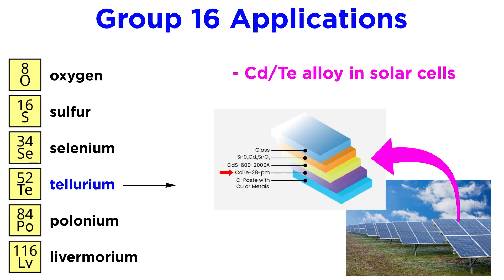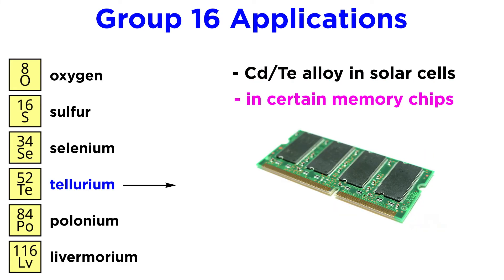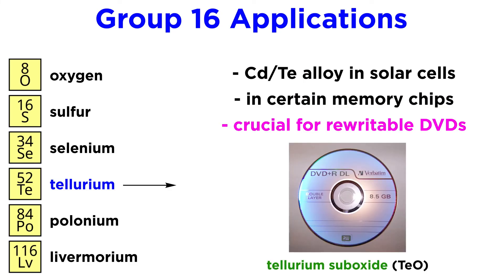Tellurium is found in some types of solar cells in the form of a cadmium tellurium alloy. It is also present in certain memory chips, and was a crucial component in rewritable DVD and Blu-ray discs, where tellurium suboxide reflectivity changes upon heating from a laser, allowing data to be written as dots of varying reflectivity.